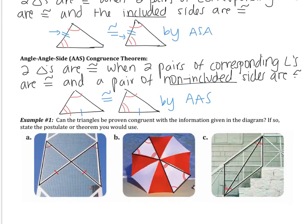Example one asks: can the triangles be proven congruent with the information given? If so, state the postulate or theorem. In example A, we have a pair of angles and a pair of sides. I need to think — is there anything else I know about this figure? Well, I know these angles are also congruent because they're vertical angles.